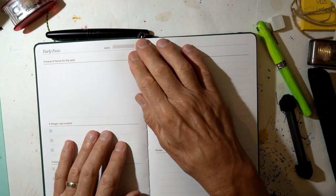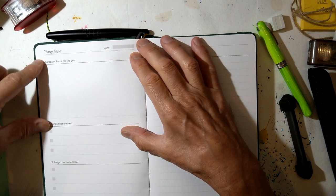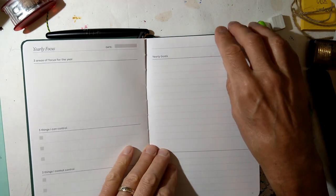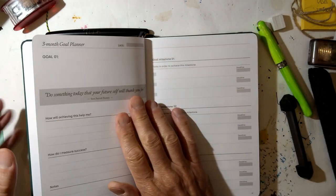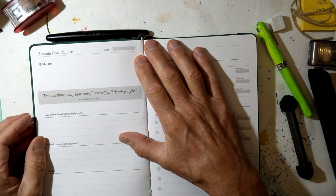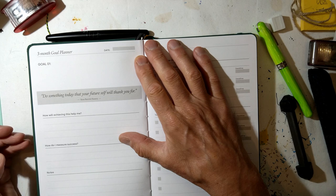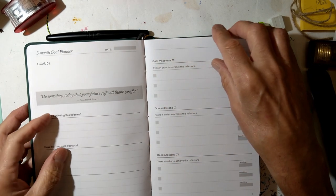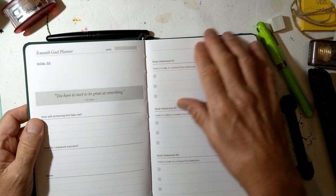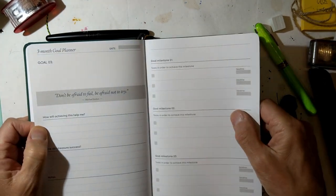After that, we go to a yearly focus. So what three areas do you want to plan out for the year? Things you can gain control of, things you can't control, goals, notes. Do something your future self will thank you for. How will achieving this help me? How do I measure success? Notes, milestones for the goals. Then a second goal, goal milestones. A third goal, goal milestones.